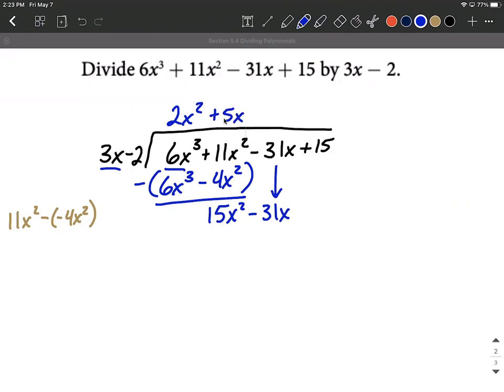Then whatever went up here in our quotient you want to distribute. So 5x times 3x sure enough is 15x squared just like we focused on. 5x times negative 2 makes minus 10x. Again subtract down. First ones cancel out because we planned that. 15x squared minus 15x squared they're gone.